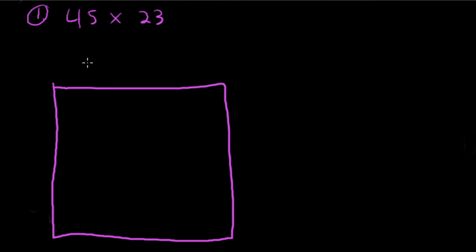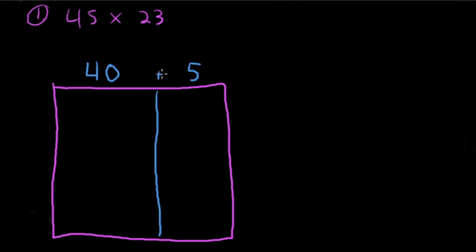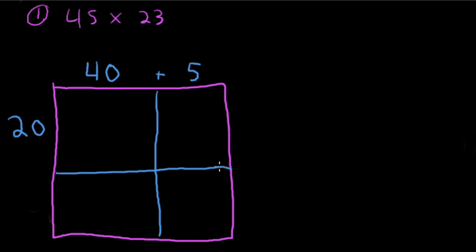Take a look at the 45 — we need to break it up into four tens, which gives us 40, and five ones, which gives us 5. I always put a small addition symbol: 40 plus 5 equals 45. For 23, break it apart — we've got 20 and 3, with an addition sign. 20 plus 3 equals 23.